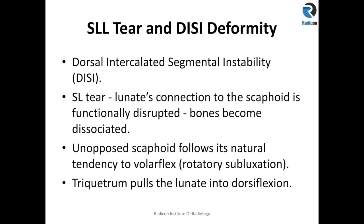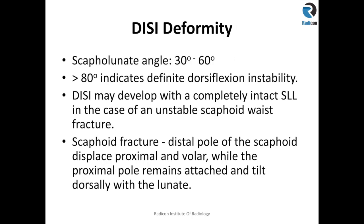If a scapholunate ligament tear goes unnoticed or untreated, it can progress to DISI deformity — dorsal intercalated segmental instability. Due to the scapholunate ligament tear, the lunate's connection to the scaphoid is functionally disrupted and the bones become dissociated. The scaphoid follows its natural tendency to volar flex, while the triquetrum pulls the lunate into dorsiflexion. A normal scapholunate angle is 30 to 60 degrees; greater than 80 degrees indicates DISI deformity.